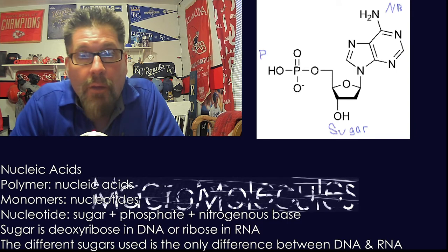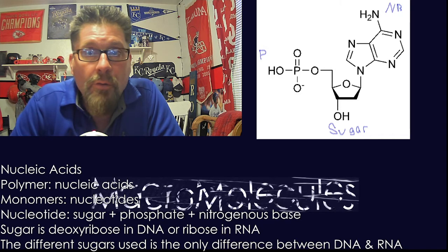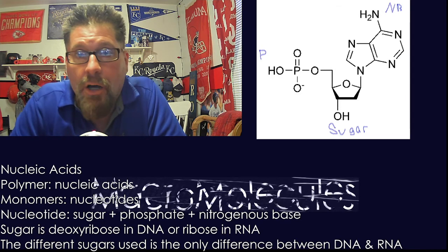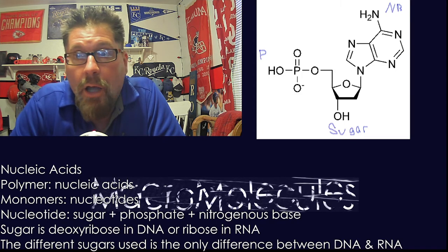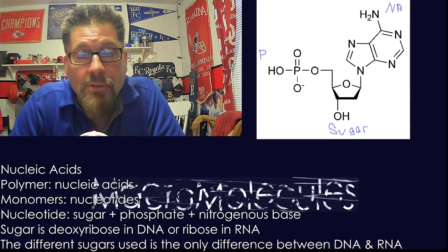The polymer would be a nucleic acid — that would be the full built molecule, with dehydration synthesis and all that. So we're talking DNA, we're talking RNA, and the monomer would be the nucleotides.